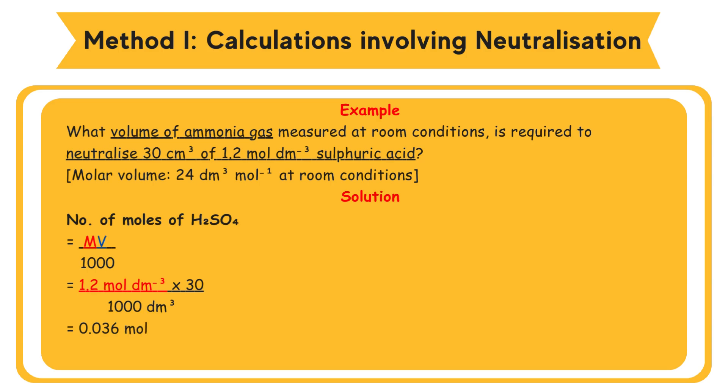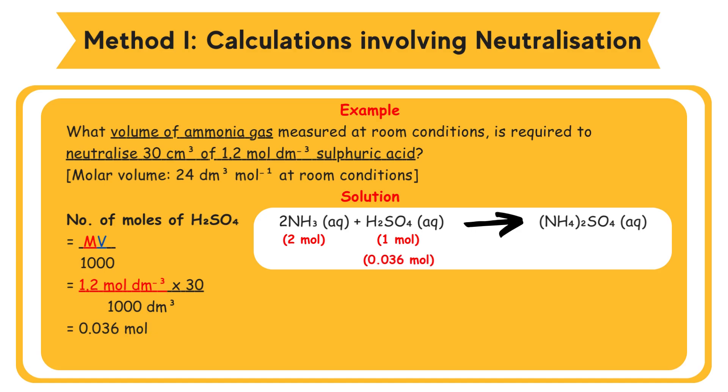2NH3(aq) + H2SO4(aq) → (NH4)2SO4(aq). From the equation, 1 mole of H2SO4 reacts with 2 moles of NH3. Hence, 0.036 moles of H2SO4 reacts with 0.036 × 2/1 = 0.072 moles of NH3.